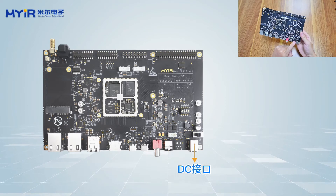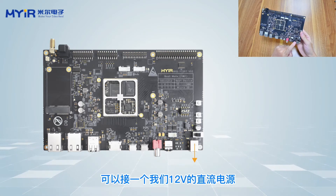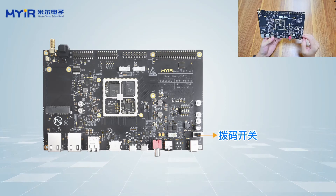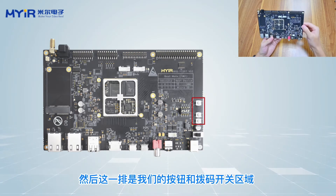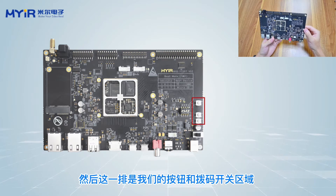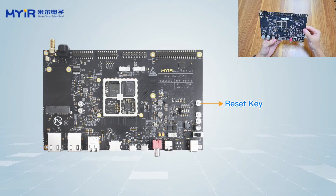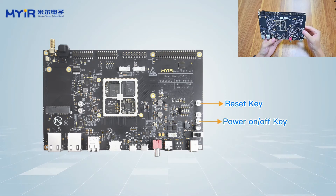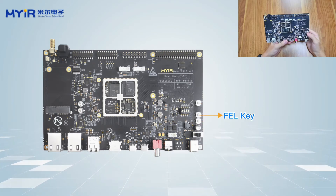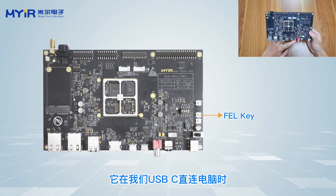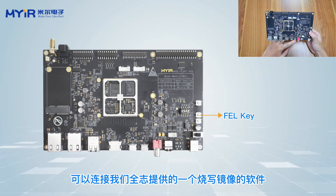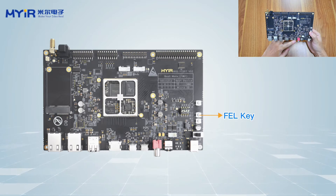This is the DC interface, which can be connected to a 12V DC power supply. This is a dial switch, which is convenient for users to operate. This row contains the buttons in the dial switch area. This button is the reset key, this is the power on/off key, and this is the flash key. It can connect to a burning/flashing tool provided by Allwinner when connecting to a computer, to update the eMMC image.